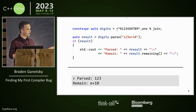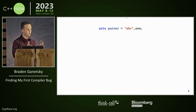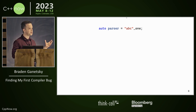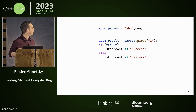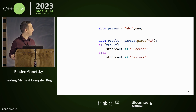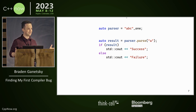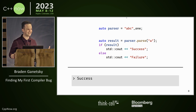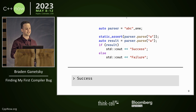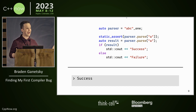I'm going to drop down to a simpler example here. This simpler example is just a one-char parser — this is where I found my bug. I have my user-defined literal underscore one, which gives me a parser that parses either A, B, or C. I'll call parse on this parser with just the character A, keeping it very simple. Let's print out success if it works and failure if it didn't. What's it going to print? It's successful. What's also cool about my library is that it works at compile time, so I can static assert that this parse works — I can do it at compile time and at runtime.